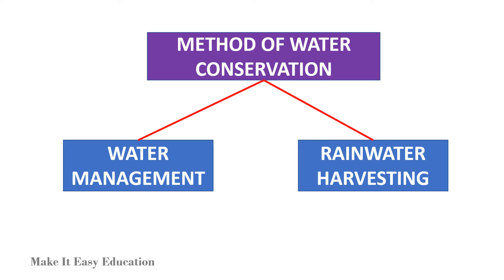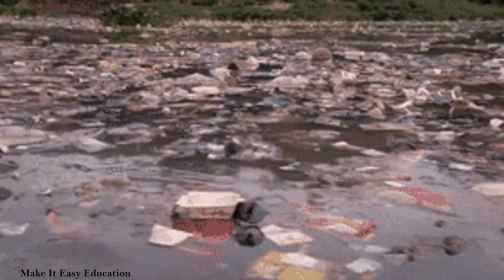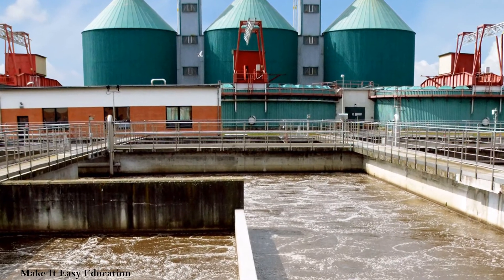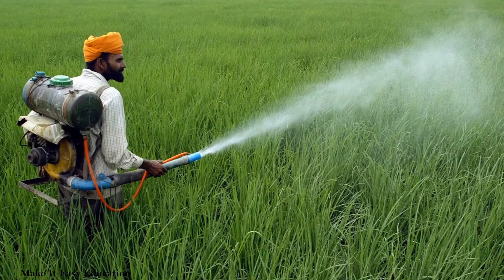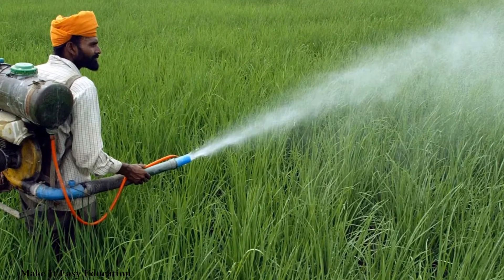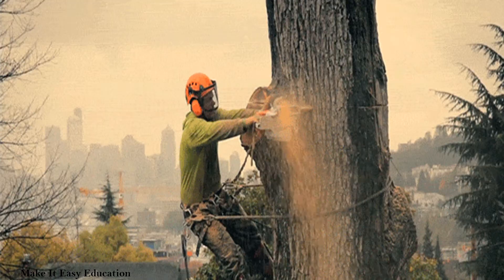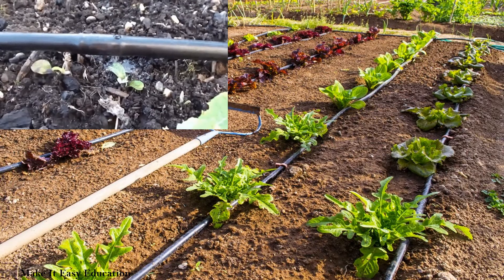The only method of preventing scarcity of water is conservation of water. Two methods of water conservation are water management and rain water harvesting. Water management includes: stop polluting the water bodies, recycling of water by separating pollutants, minimizing the use of chemicals and fertilizers in agriculture, and stopping deforestation.